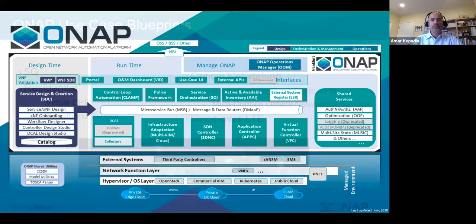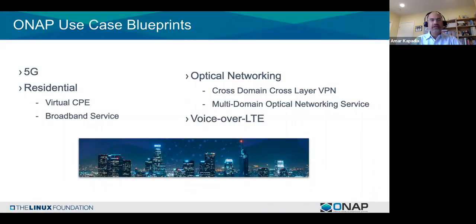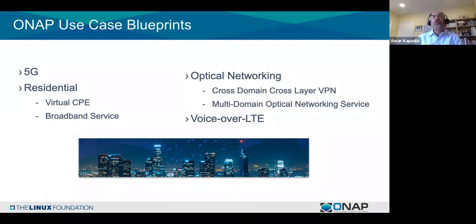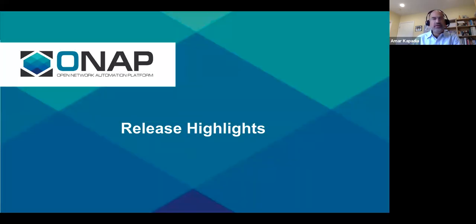ONAP has a set of use case blueprints created by the community to show what types of things ONAP can do. The blueprints today include 5G; two for residential connectivity — virtual CPE and broadband service; two for optical networking — CCVPN (cross-domain, cross-layer VPN for L2/L3) and MDONS (multi-domain optical networking service for L0/L1); and voice over LTE. With that, we are concluding the overview of ONAP and jumping into the release.